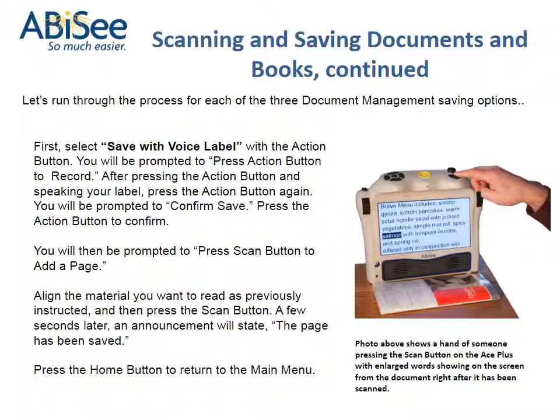First, select Save with voice label with the action button. You will be prompted to press the action button to record. After pressing the action button and speaking your label, press the action button again. You will be prompted to confirm save — press the action button to confirm. You will then be prompted to press the scan button to add a page. Align the material you want to read as previously instructed, and then press the scan button. A few seconds later, an announcement will state the page has been saved. Press the home button to return to the main menu.